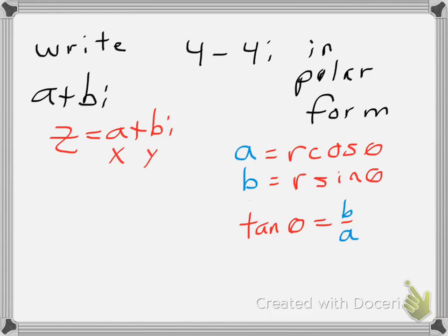And since our polar form involves both a and b, we're essentially putting in these values in place. So, in other words, z is going to be a, which is r cosine theta, plus r sine theta, and I have to stick in my i value.